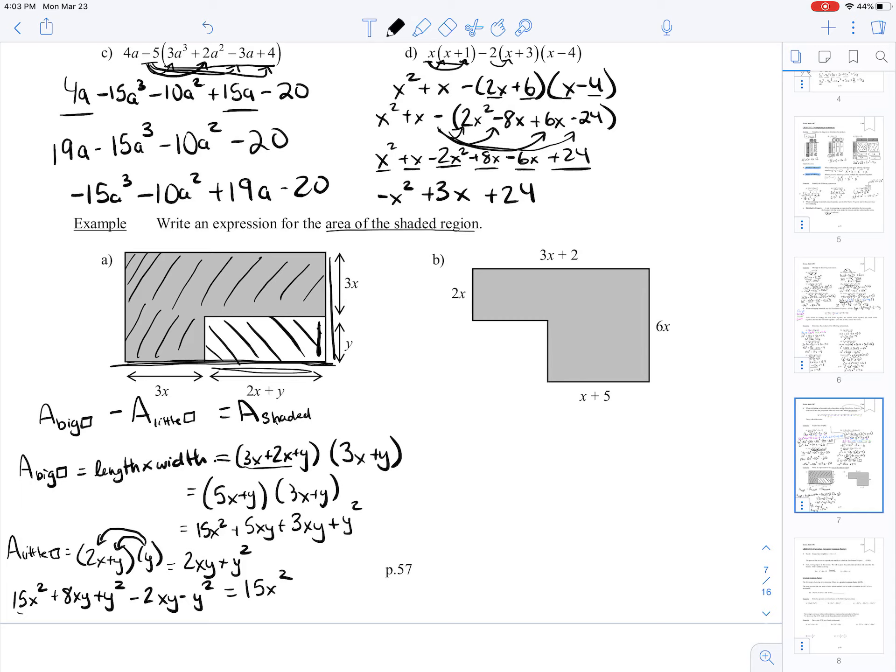Can I combine these xy terms? Yes, I can. What's 8 minus 2? Well, that's 6xy. What about these y squared terms? I've got positive y squared minus y squared. That just cancelled out to 0. So the area of my shaded triangle is 15x squared plus 6xy.